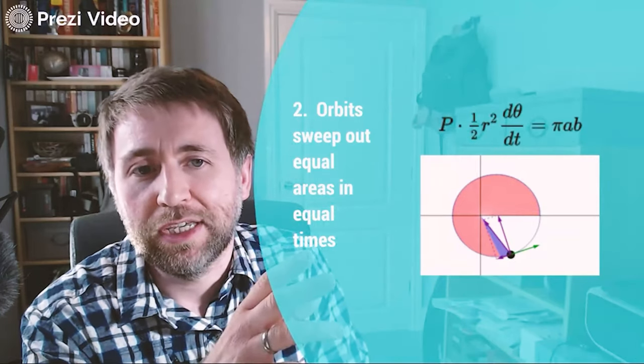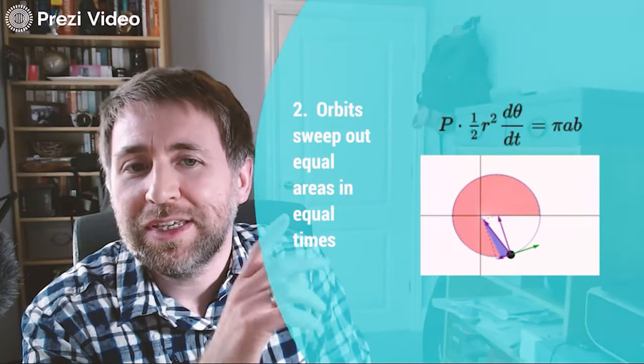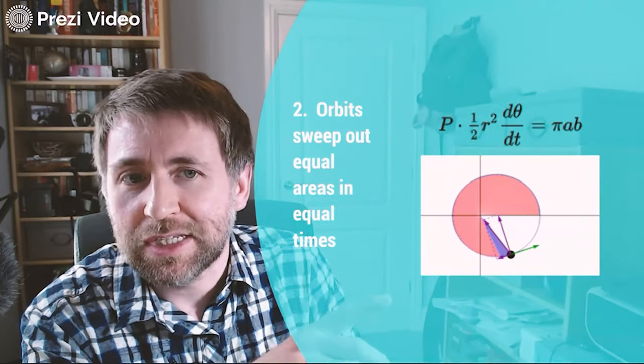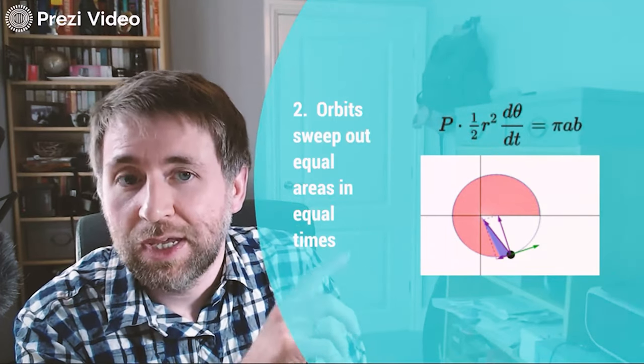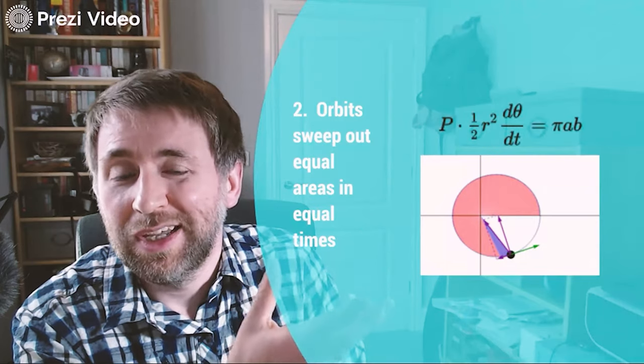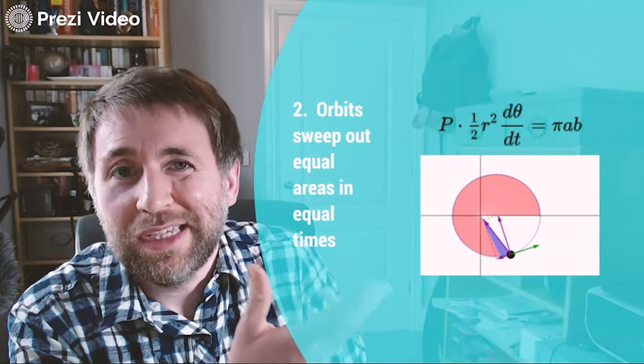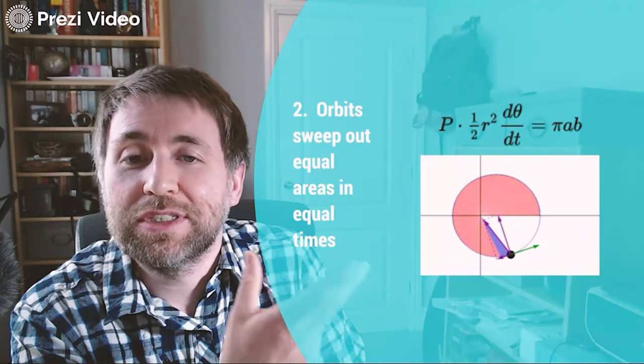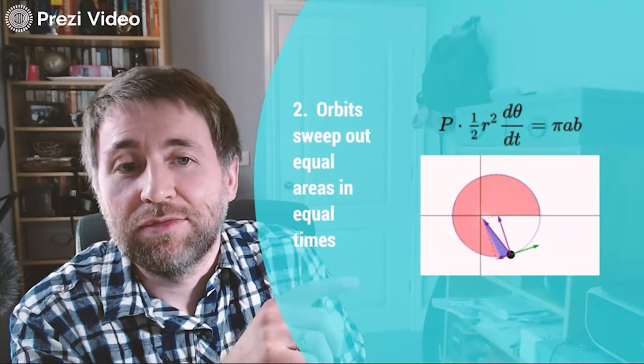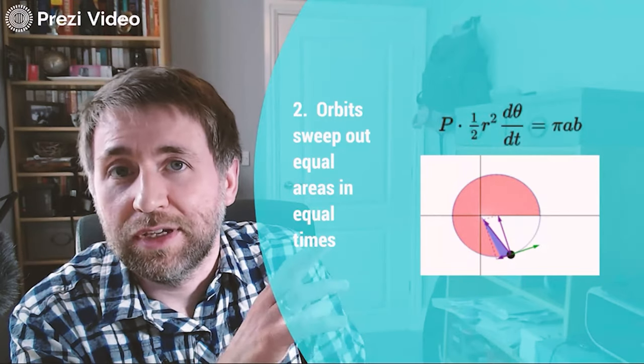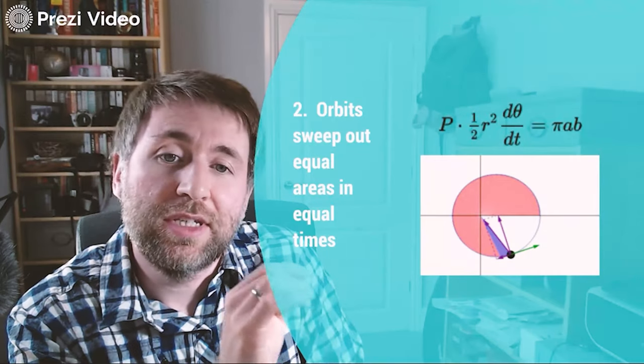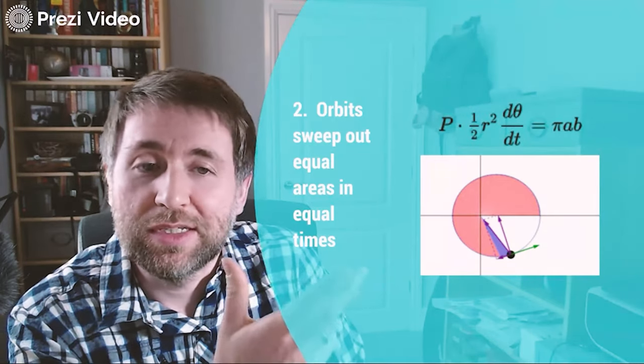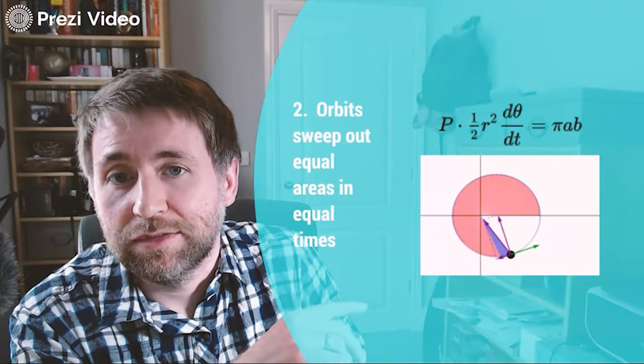Secondly, the orbits sweep out equal areas in equal times. So you can see this little graphic here. Now what that means is that when it's closer to the center of gravity, an orbiting body moves faster. If you think about carving an elliptical pizza or something like that and you want to give out equal slice areas, it means that the circumference, the kind of arc of that area, needs to be longer when the distance to the center of gravity is shorter. So equal areas in equal times implies that it's going faster when it's closer to the center of gravity.